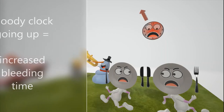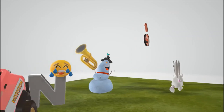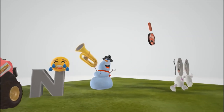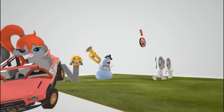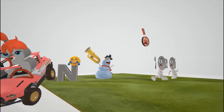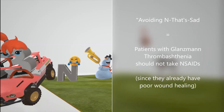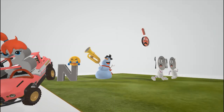This sad guy doesn't like when the girls run away from him — he's an NSAIDs guy, and he's sad. The point is that people with Glanzmann's thrombasthenia should avoid NSAIDs, because NSAIDs inhibit cyclooxygenases, and cyclooxygenases produce thromboxane A2, a protein which promotes platelet plug formation. So taking NSAIDs will lead to decreased plug formation, which is already a problem in this disease.